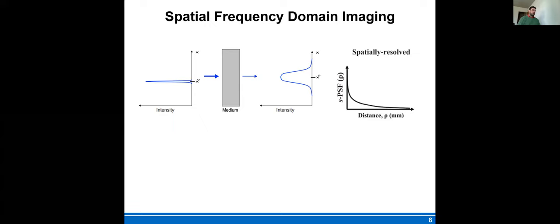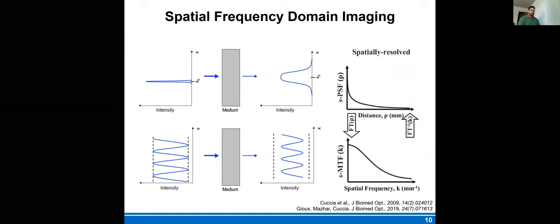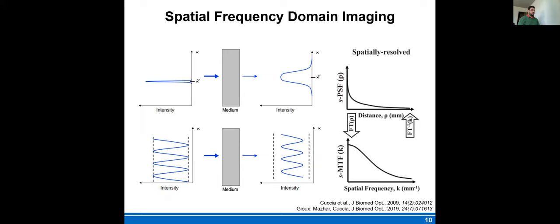If you do a Fourier transform of that point spread function, you obtain what we call the modulation transfer function. The modulation transfer function no longer looks at the blurriness as a function of distance, but the effect of this blurriness as a function of spatial frequency. It means that instead of shining a point of light, we can shine a pattern of light and look at the dampening of the amplitude modulation of the sine wave as a function of spatial frequency. Now the power of this is that frequency methods allow looking at many pixels at the same time - that's the power of SFDI. We can look at millions of pixels in a single image.